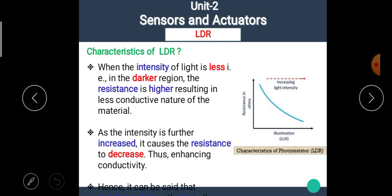Now let's see the characteristics of LDR. When the intensity of the light is less, that is in the darker region, the resistance is higher, resulting in less conductive nature of the material. That means in this graph, we can see that there is the illumination on X axis and resistance on Y axis. At the lowest value of illumination, the resistance is high. Similarly, as the intensity is further increased, it causes the resistance to decrease, thus enhancing conductivity. That means we can see here, as the light intensity goes on increasing, the resistance of the LDR goes on decreasing. At the higher light intensity, the resistance has negligible value.